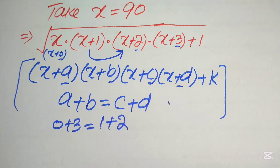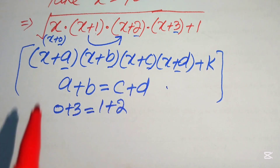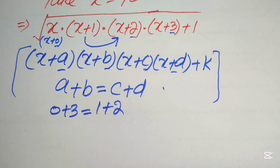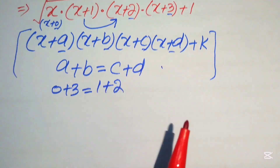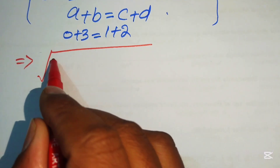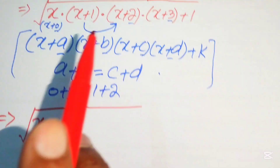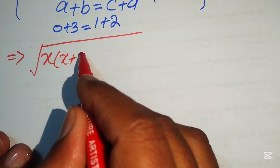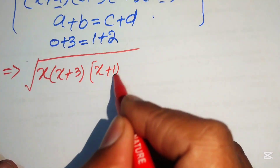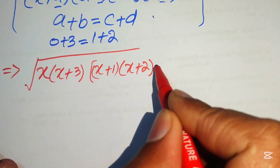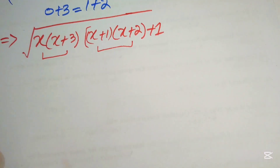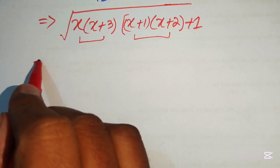This is the nice method in which you rearrange the above factors in order to further solve the problem. If you multiply the terms in any other order, you get more complicated calculations. So we rearrange and write it as the square root of: x(x+3) paired with (x+1)(x+2), plus 1.